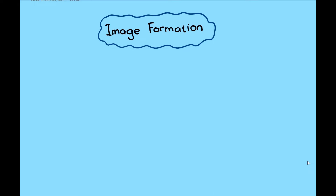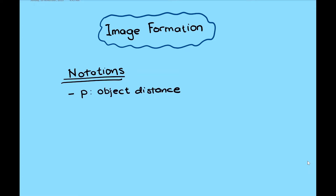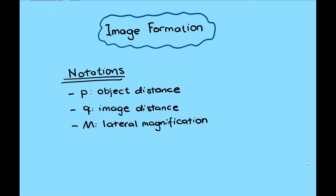In this video, we're going to discuss image formation after light reflected from mirrors, namely flat mirror and spherical mirror. First, let's see the notations and symbols we're going to use. Symbol P represents object distance, Q is the image distance, and M is the lateral magnification, also known as the height ratio.